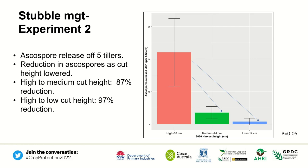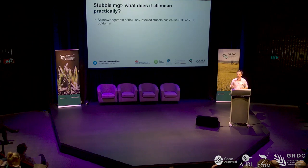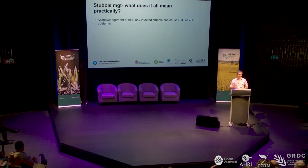You're probably wondering — what does ascospore release mean for me, what can I walk out of here knowing and implementing for my grower? Firstly, it's the acknowledgement of the risk that any infected stubble has the ability to initiate an epidemic. In that spore experiment we were using just five tillers and getting anywhere from 100 yellow leaf spot spores up to 300 septoria spores. Multiply that out over a square metre, a hectare, a paddock — we're talking about enormous spore loads.